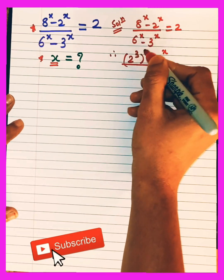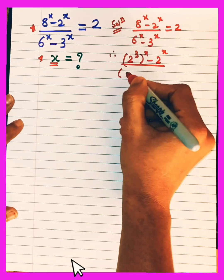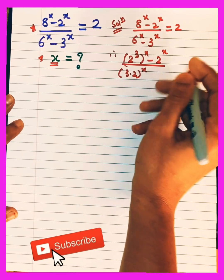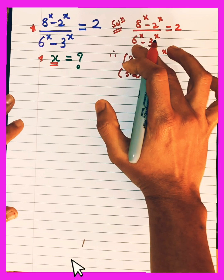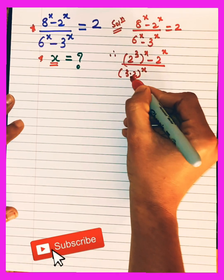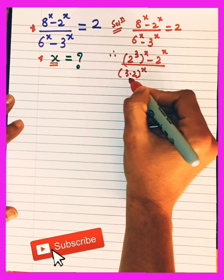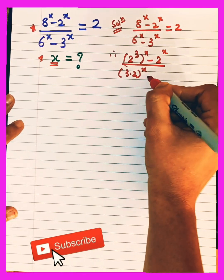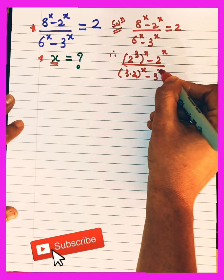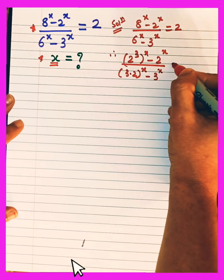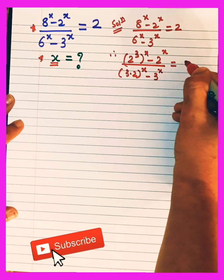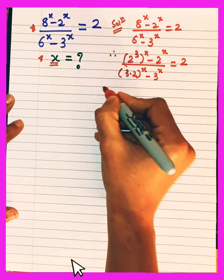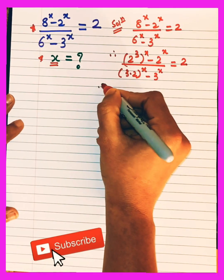In place of 6^x, I am keeping (3 × 2)^x — so in place of 6 I am keeping 3 × 2, the factors of 6 — and this minus 3^x I am keeping as it is. This side equals 2.